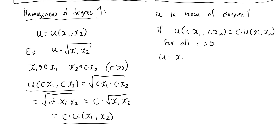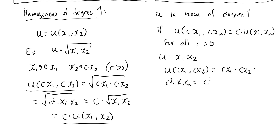For example, the utility function x1 times x2 is not homogeneous of degree one. u(cx1, cx2) equals cx1 times cx2, which is c squared times x1 times x2 — that is c squared times u(x1, x2). It needs to be c, not c squared. For this utility function, if I double both x1 and x2, utility will be quadrupled, not doubled. This function is instead an example of a function that is homogeneous of degree two.